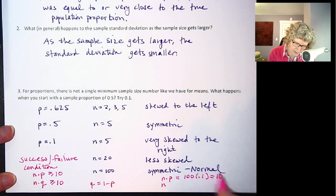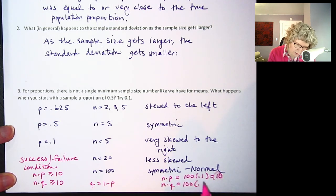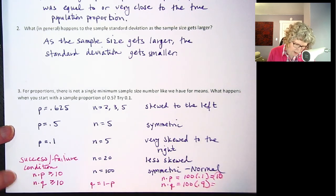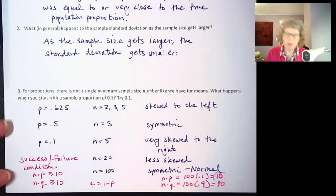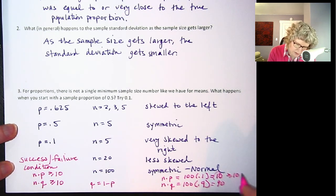And then in this case, that's the smaller one. So n times q is definitely going to be met because that's 0.9. So that's going to be 90. So we just check both of them. And we say that's greater than or equal to 10. And that's greater than or equal to 10.